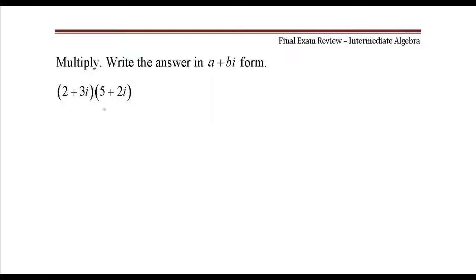To multiply these two binomials together, I'm going to use FOIL multiplication. Multiply the first two terms together, that's 10.